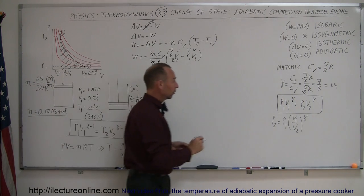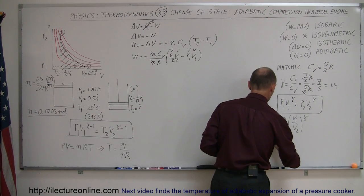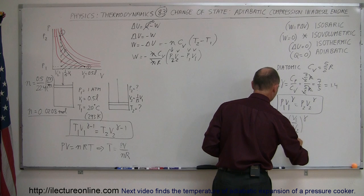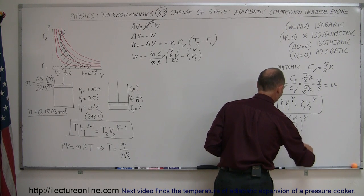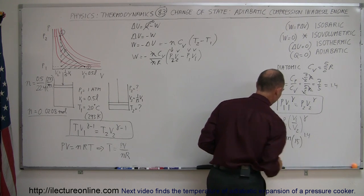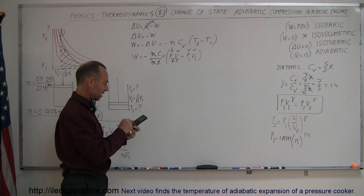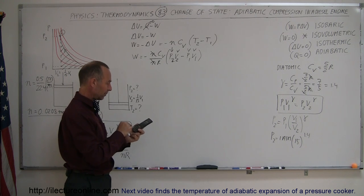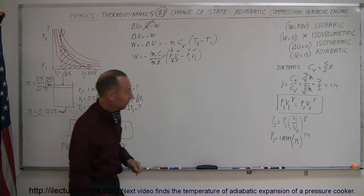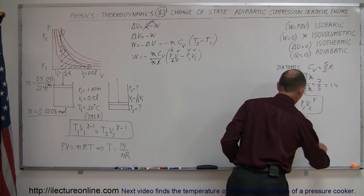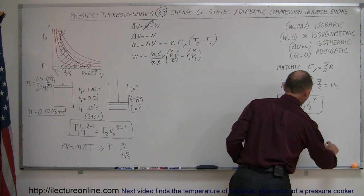Gamma is 1.4, so P2 equals 1 atmosphere times 15 to the 1.4 power. For the calculator, 15 raised to the 1.4 power is 44.3, so this equals 44.3 atmospheres.